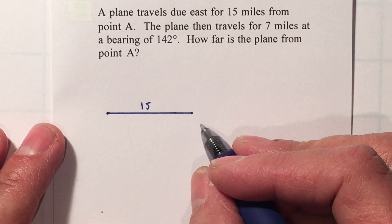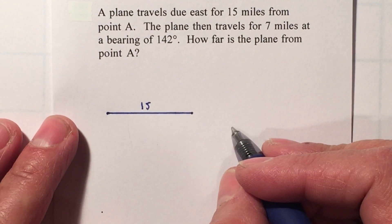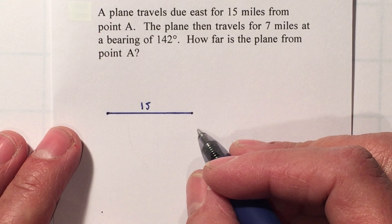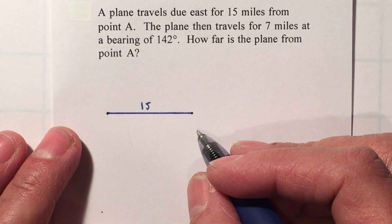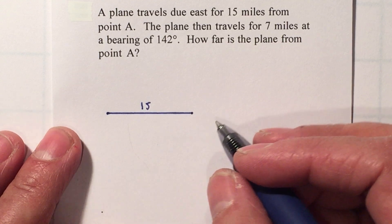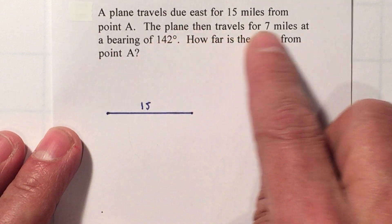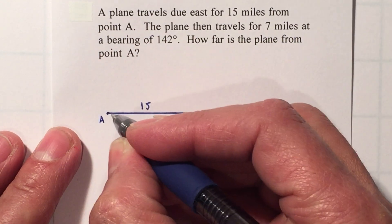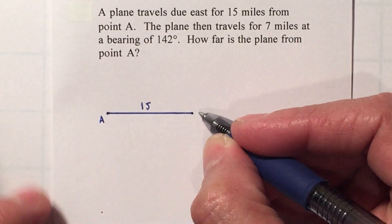Now you want to make sure that your drawing is big enough. If you want to do your drawing on a separate piece of paper, that way you can easier see the angles and triangles, just make sure you staple it. The plane then travels for 7 miles at a bearing of 142°. So this is where it started, this is point A, and after here...